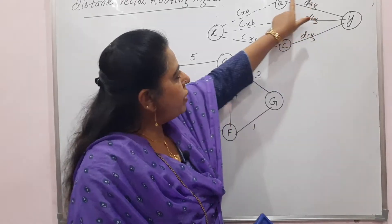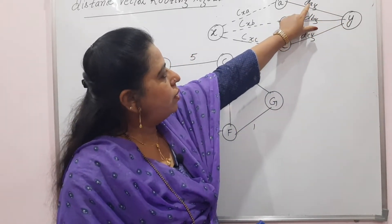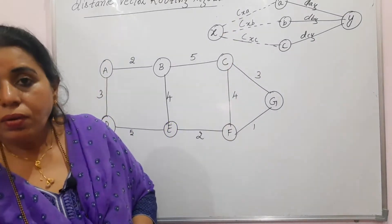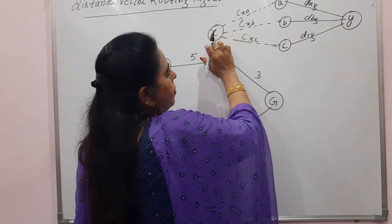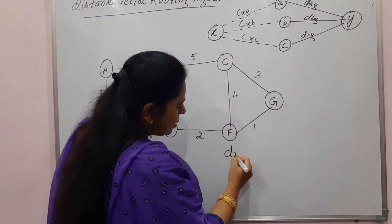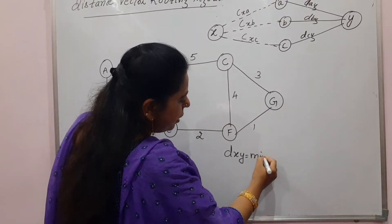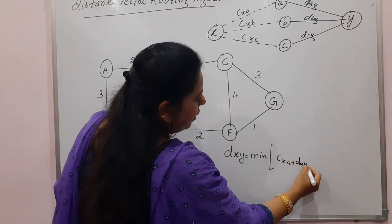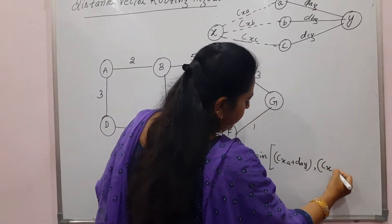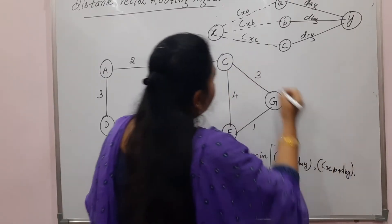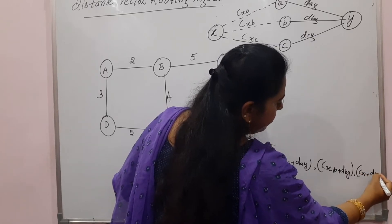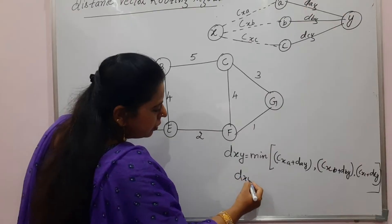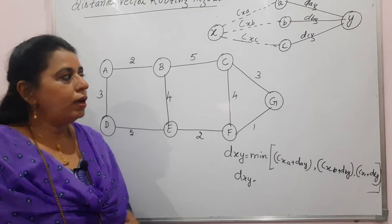This is the least cost between the intermediate node and the destination node, represented on these links, whereas the cost between the source node and the intermediate nodes is mentioned with Cx. The Bellman-Ford equation says the shortest distance from the source to the destination — dxy — will always be the minimum of: CxA plus DAY, CxB plus DBY, or CxC plus DCY. Whichever is the minimum becomes the value for Dxy, the shortest distance.